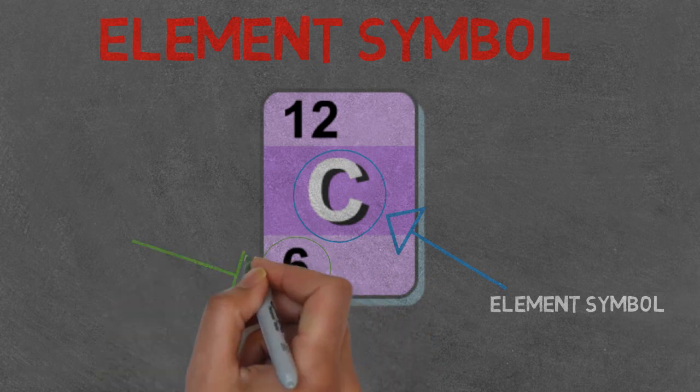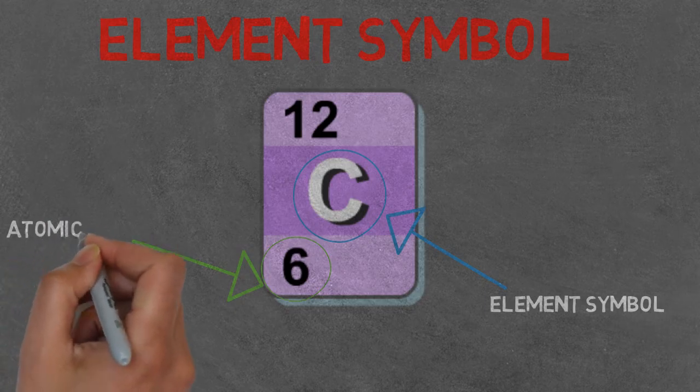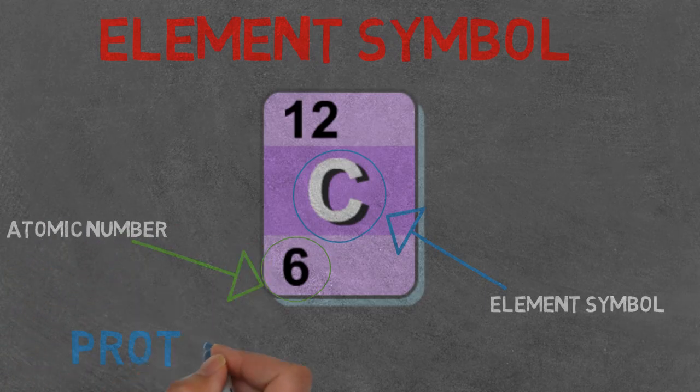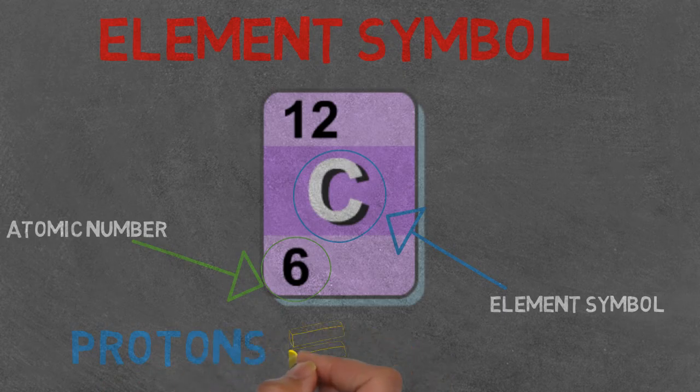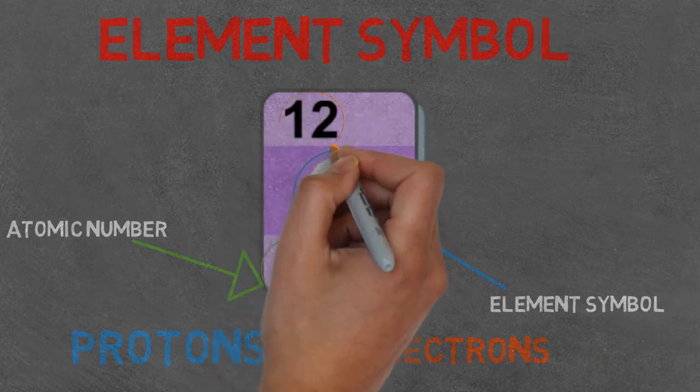The six is carbon's atomic number, so this is how many protons the atom has. In an atom, you have the same amount of protons and electrons, so this six also represents the number of electrons in the atom.